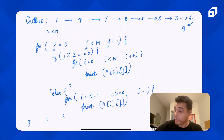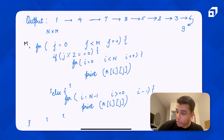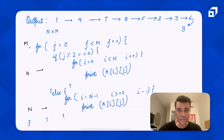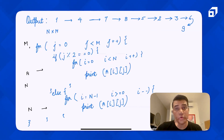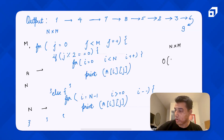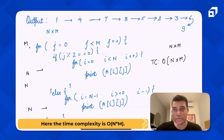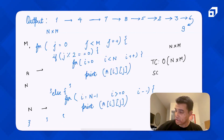What would be the time complexity for this approach? The outer loop runs m times. The inner loop — whether the column is even or odd — always runs n iterations. So in all cases it is going to be n cross m iterations, meaning the time complexity is O(n × m).